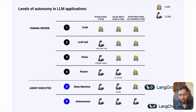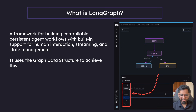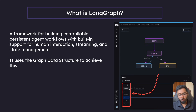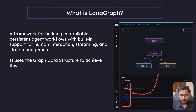LangGraph is going to be flexible as well as reliable. This state machine is where LangGraph comes into the picture. LangGraph is a framework for building controllable, persistent agent workflows with built-in support for human interaction, streaming, and state management. It uses a graph data structure to achieve this.